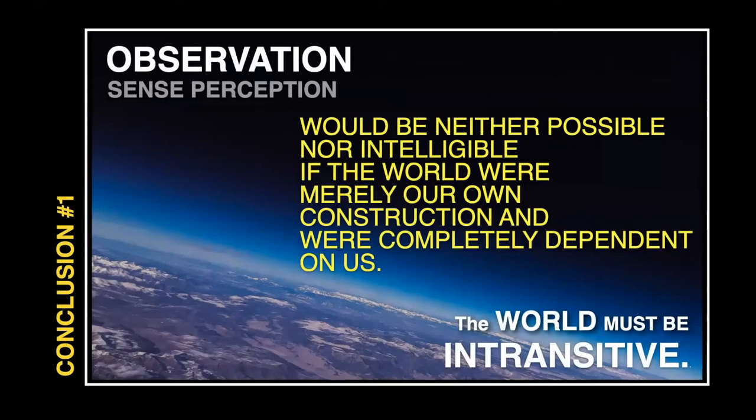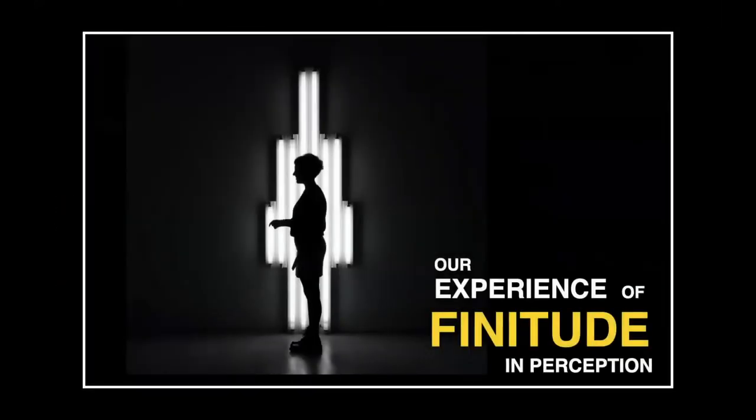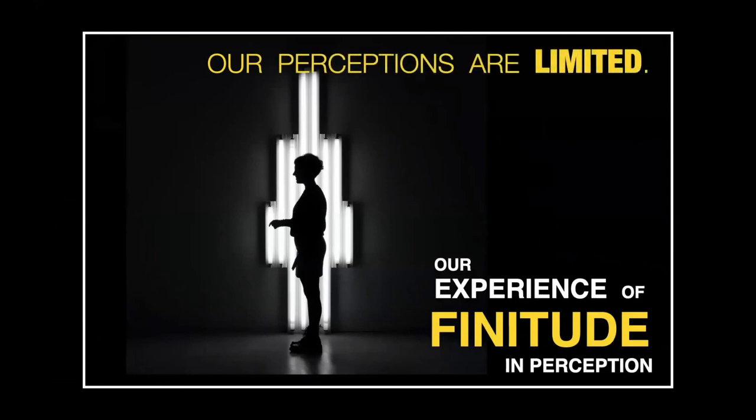The first conclusion of critical realism is that observation and sense perception would be neither possible nor intelligible if the world were merely our own construction and completely dependent on us. In short, the world must be intransitive. That's the first insight. We'll share the slides after if you want, so you don't have to copy the drawings.